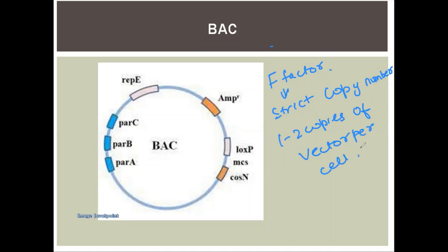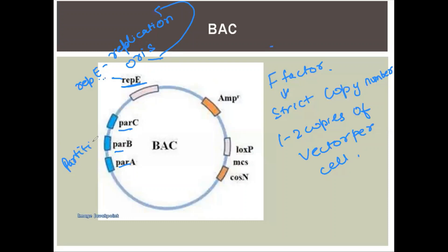The F plasmid contains the RepE gene, which encodes the RepE protein responsible for replication. It also contains PAR genes (parA, parB, parC) which handle partition — ensuring proper segregation of the vector during cell division.